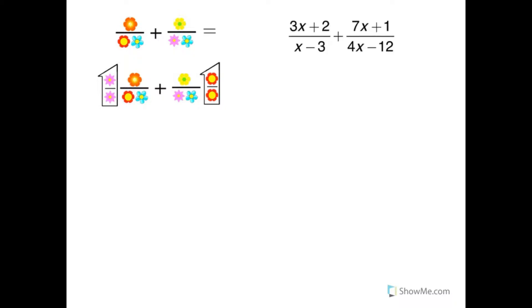So if we want to simplify this rational expression, I'm going to look at the two denominators first. x minus 3 can't be factored further, but 4x minus 12, I can factor out 4, and that gives me x minus 3.